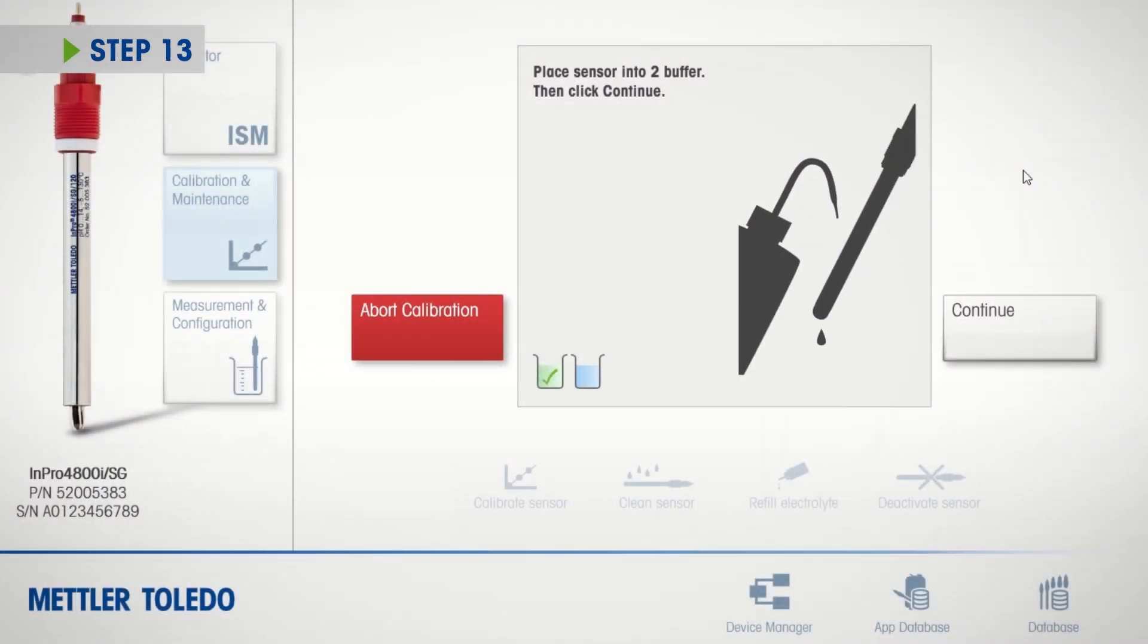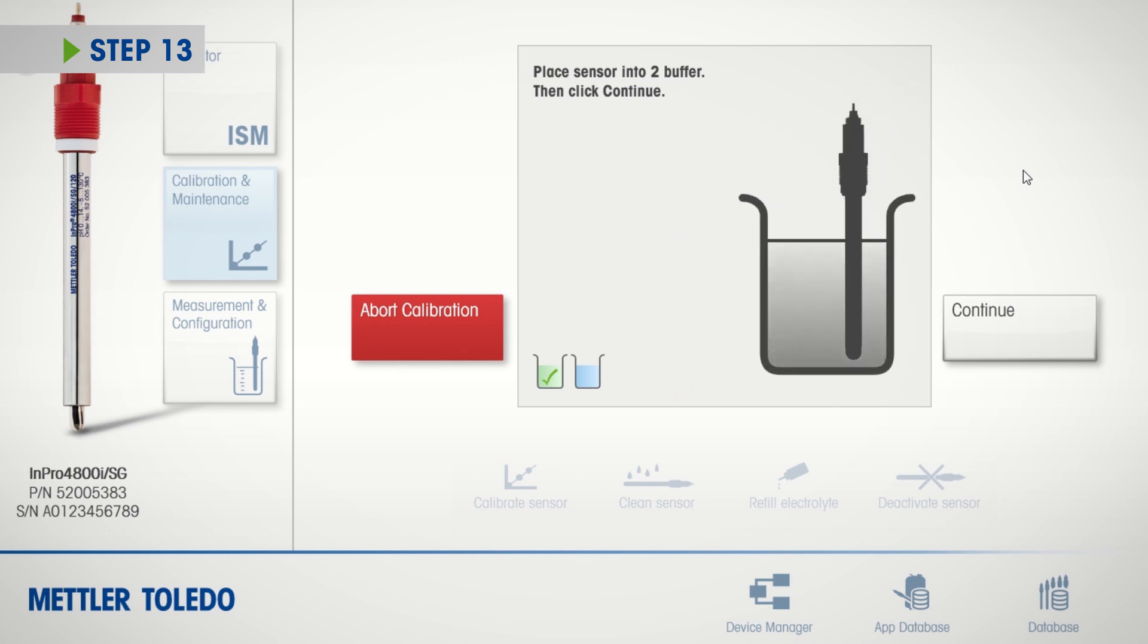Rinse the sensor with deionized water and pat dry before placing the sensor in the next buffer. Click Continue and follow the on-screen instructions. Wait for the checkmark and successful calibration.